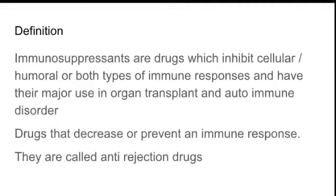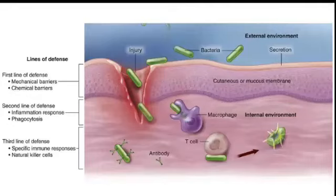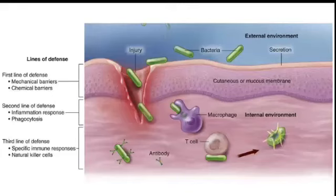Immunosuppressants are otherwise called anti-rejection drugs. To understand cellular immune response and humoral immune response, we will see the lines of defense in our body. When bacteria enters, we have three lines of defense to prevent infection. The first line of defense is the mechanical or chemical barrier, which is the skin. If that breaks, microorganisms enter our body. The second line of defense is the inflammation process.